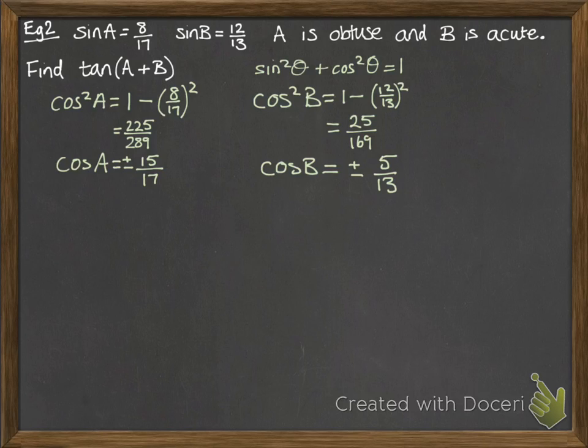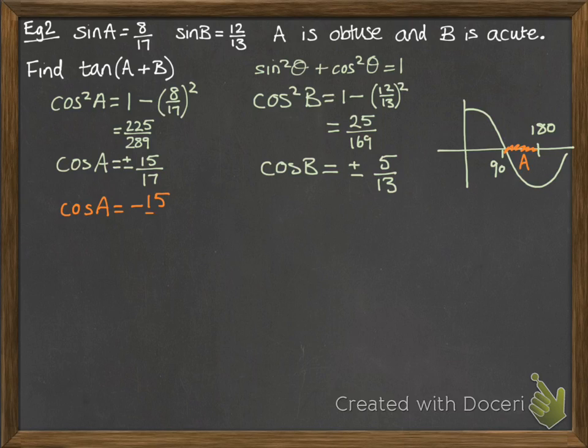Now we need to figure out whether we want the positive or the negative of that, and that's where knowing that they're obtuse and acute is helpful. So think about the graph of the cos function. So we're told, first of all, that A is obtuse, meaning it's between 90 and 180. Now in that portion of the graph, the cos curve is below the x-axis, so it's negative. So cos of A will take the negative value minus 15 over 17. We'll do the same with B. B is acute, so it's between 0 and 90. And at that portion of the graph, the curve is positive. So cos B will take the positive value, 5 over 13.